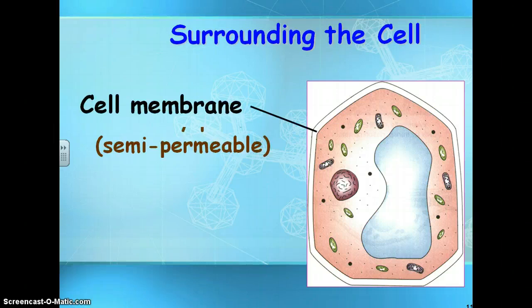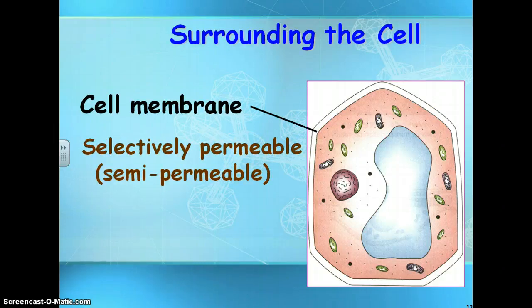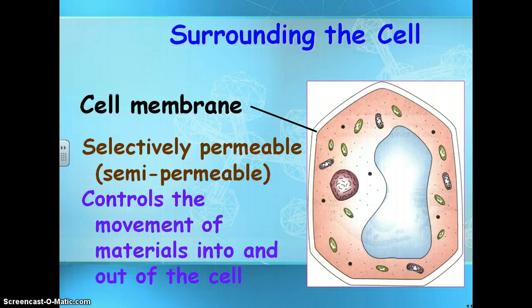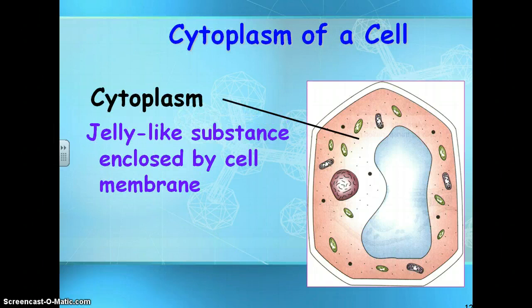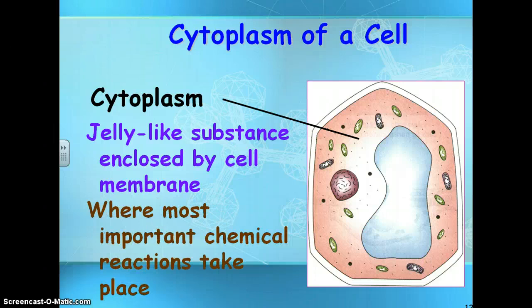Surrounding the cell, you have a cell membrane, which is selectively permeable or semi-permeable, meaning that some things can pass through but not all things. It controls the movement of materials into and out of the cell. The cytoplasm is on the inside — it's a jelly-like substance enclosed by the cell membrane. It's where most important chemical reactions take place, and that's where you find all the organelles.